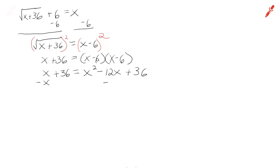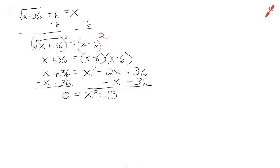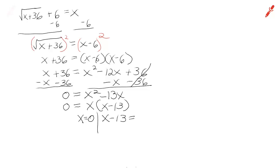Now the way to solve a quadratic equation most of the time is you have to set it equal to 0, which is what I'm doing here. We have 0 equals x squared minus 13x — the 36 zeroes out. Now I'm going to solve this by factoring — the easiest kind of factoring. Set each factor equal to 0, and we'll get x equals 0 and x equals 13. But do both of these answers work?